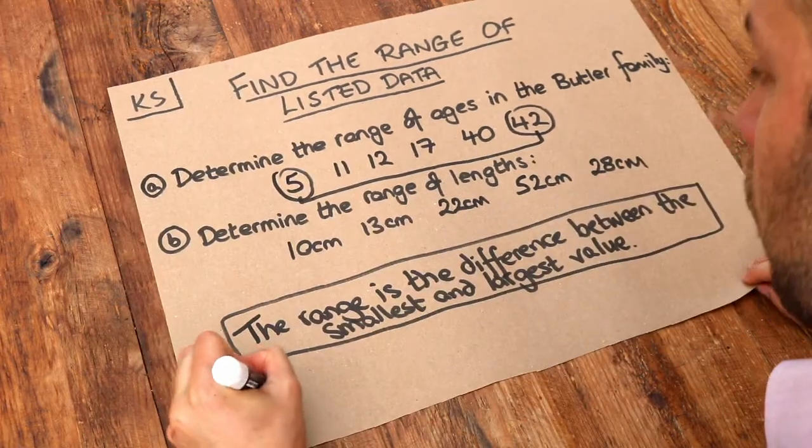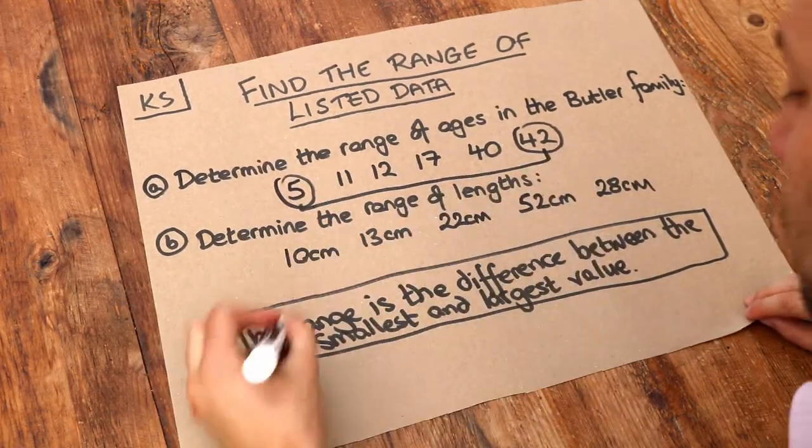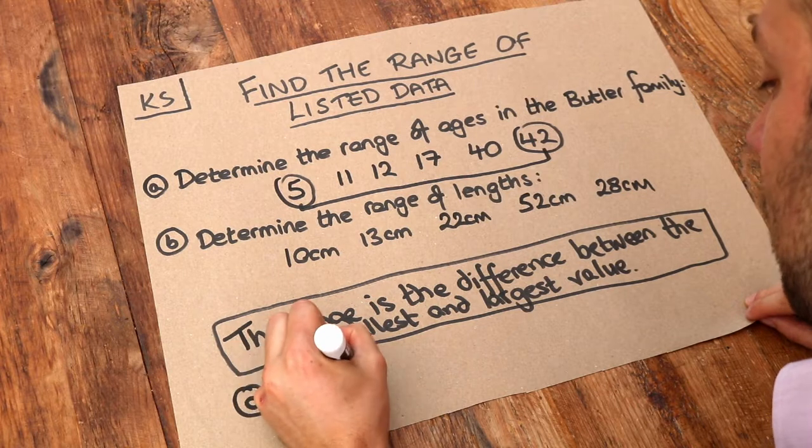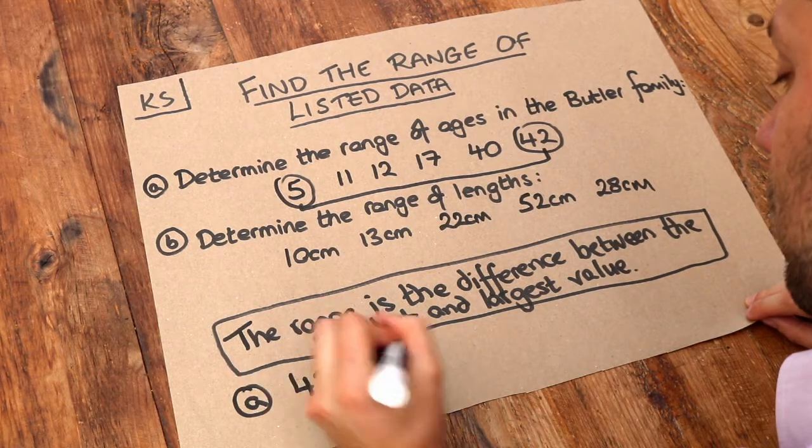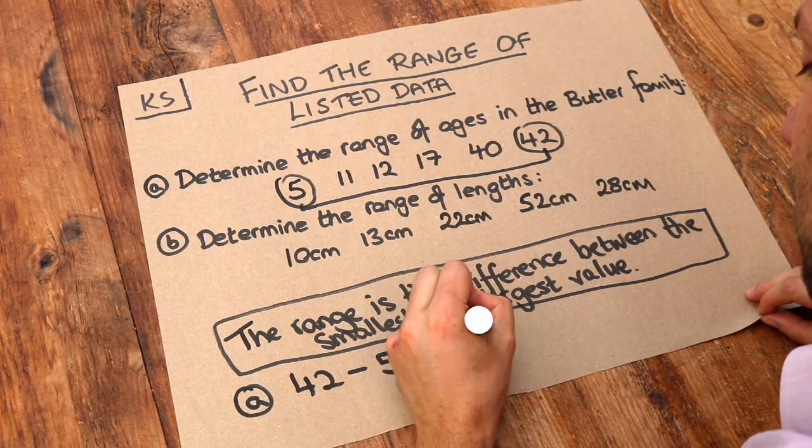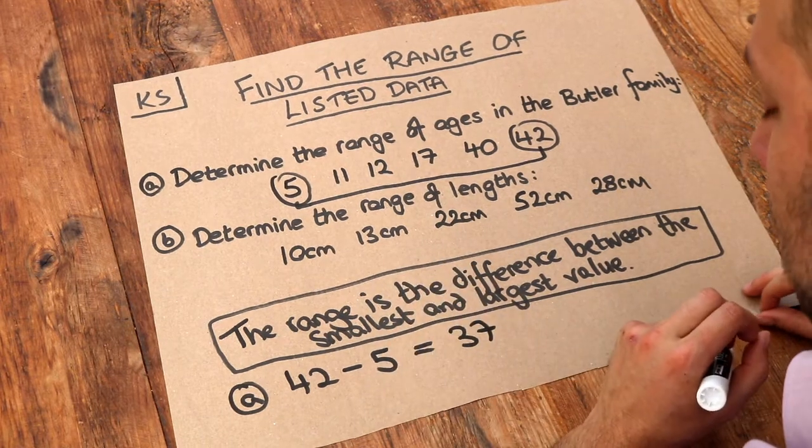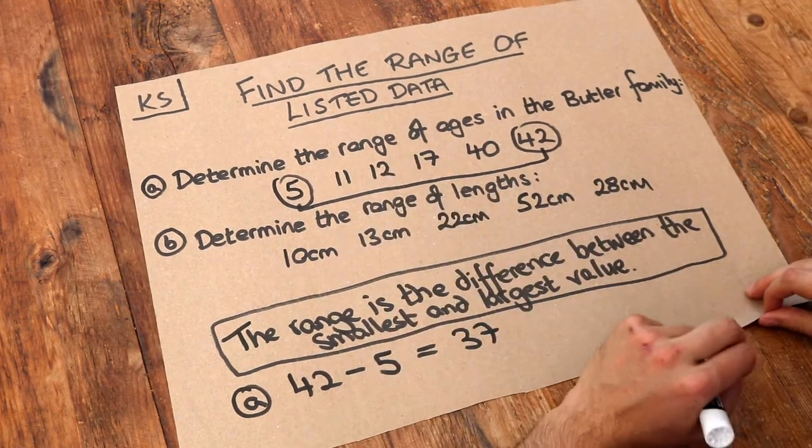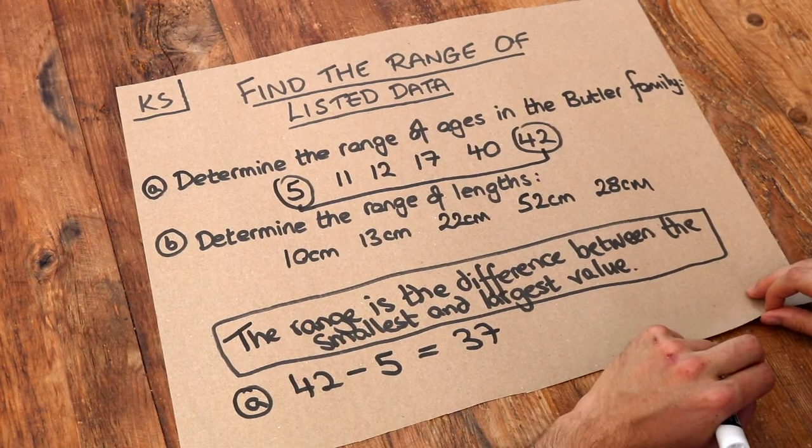So for part A, we just do the difference between the largest and the smallest. We do 42, the maximum, minus the minimum of 5, and that gives us 37. So there's 37 years between the youngest person in the family and the oldest person in the family.